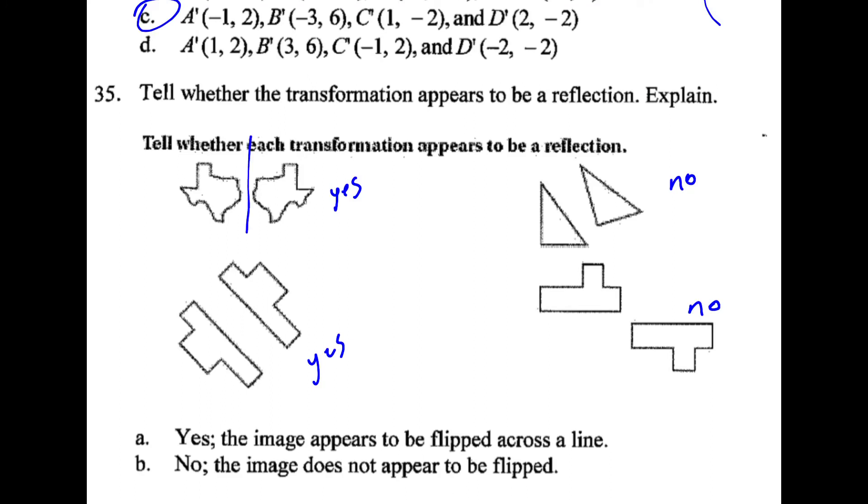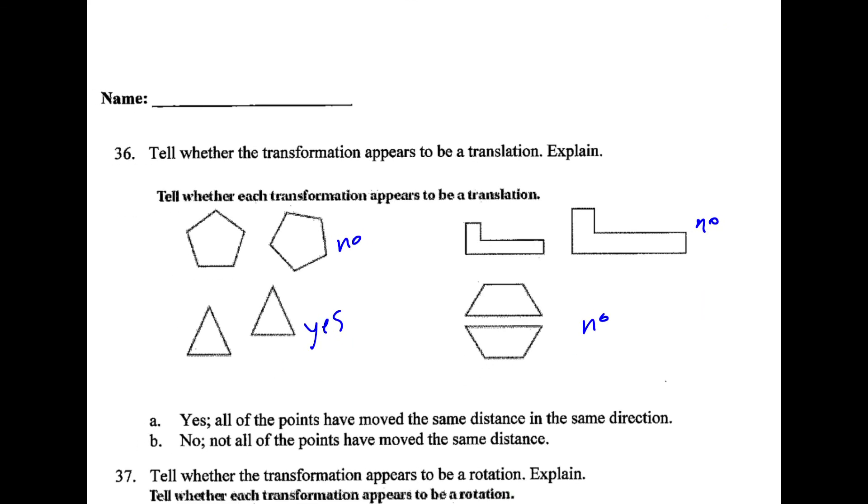Reflections will have a line of symmetry. And if you reflect it across those, you would match up exactly on the other side. This is not that. We see that there's a rotation here, or reflection in. There's 2 things going on, not just flipping across a line. Translations just move up and down, left and right. They don't get bigger like this one. They don't flip like this one. And they're not rotated around like this one. So that's why the answer is yes here only.